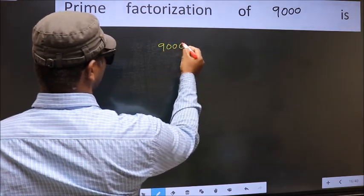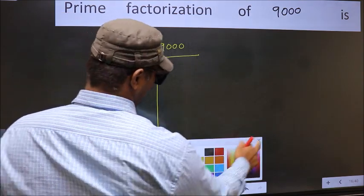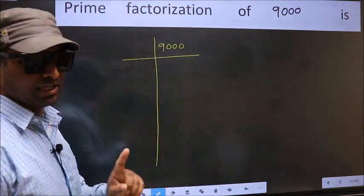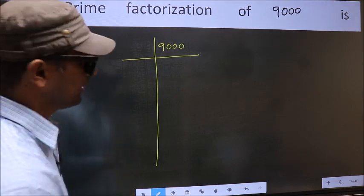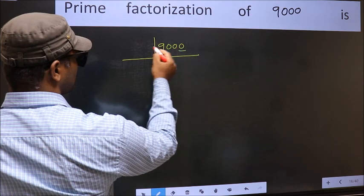9000. This is your step 1. Next, in this number, last digit is 0 so take 5.